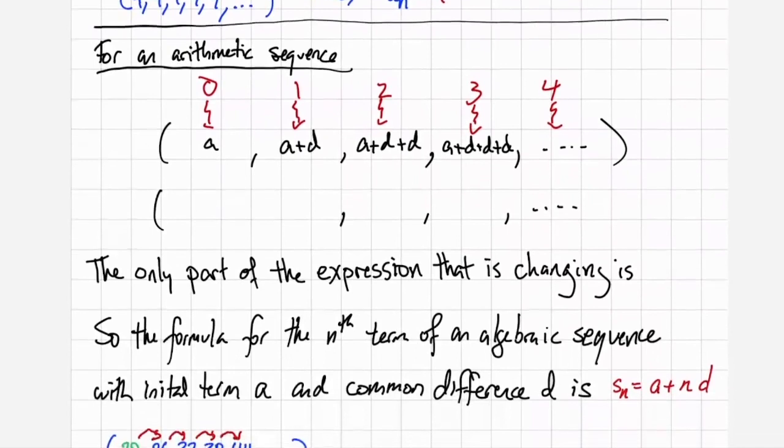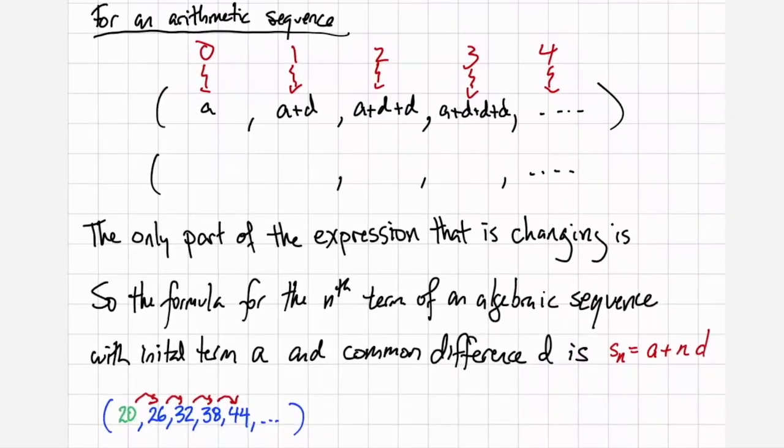The next level up would be an arithmetic sequence. In an arithmetic sequence the zeroth term is equal to a, then the way you get between successive terms is to increment by d. So this goes from a to a plus d to a plus d plus d to a plus d plus d plus d.